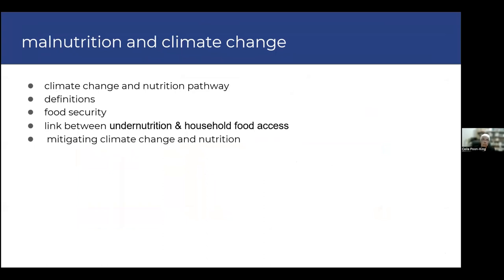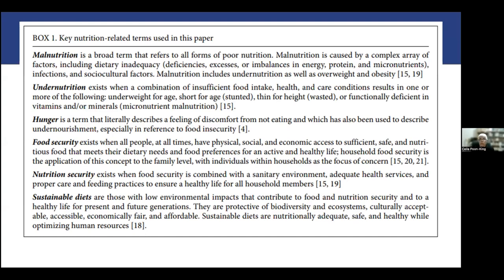When we look at chronic diseases and nutrition in relation to climate change, the areas we'll briefly go through are: the climate change and nutrition pathway, the definitions, food security and the link between under-nutrition and household food access, and mitigating climate change and nutrition. We're going to look at a wide definition of under-nutrition — in our context, it includes both malnutrition as well as obesity.